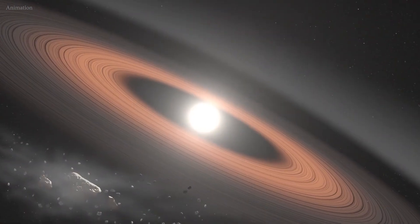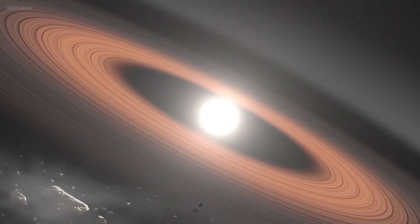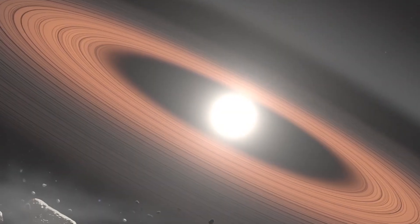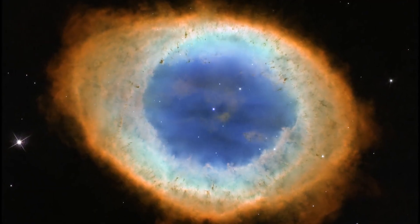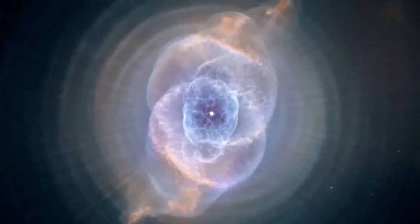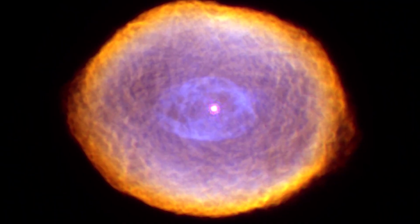A white dwarf is what stars like the Sun become after they exhaust their nuclear fuel. Near the end of its life, this type of star expels most of its outer material, creating a planetary nebula. Only the hot core of the star remains.